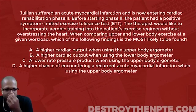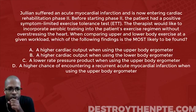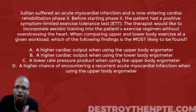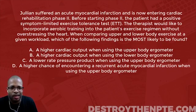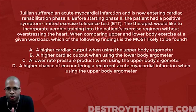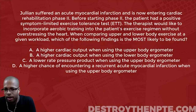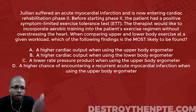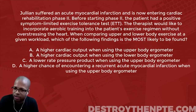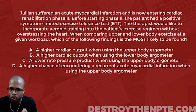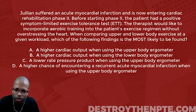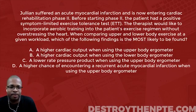Julian suffered an acute myocardial infarction and is now entering cardiac rehabilitation phase two. Before starting phase two, the patient had a positive symptom-limited exercise tolerance test, ETT. The therapist would like to incorporate aerobic training into the patient's exercise regimen without overstressing the heart. When comparing upper and lower body exercise at a given workload, which of the following findings is most likely to be found?